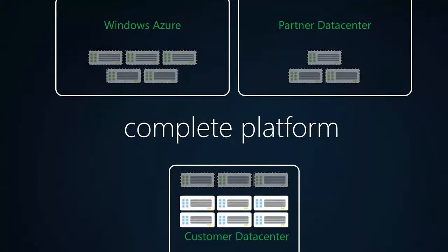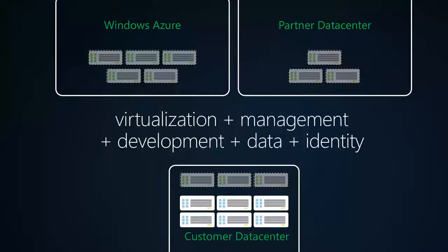That is the vision driving us to build a comprehensive cloud operating system platform with all of the flexibility and choices that customers require. You can deploy this cloud operating system in your data center, consume it from partner data centers, or use it from Windows Azure. The consistency we bring — through commonality of virtualization with no hypervisor format transformations required, management infrastructure, development infrastructure, data, and identity — these are unique attributes of our cloud operating system vision.